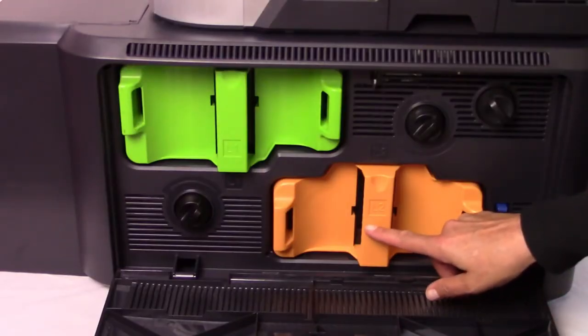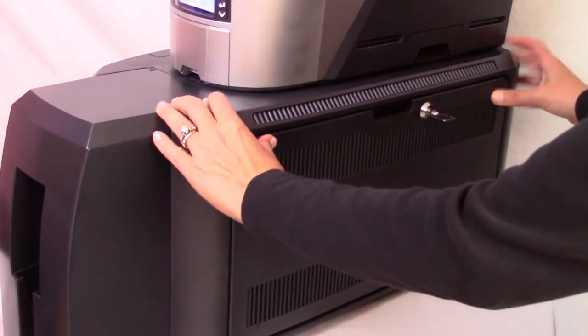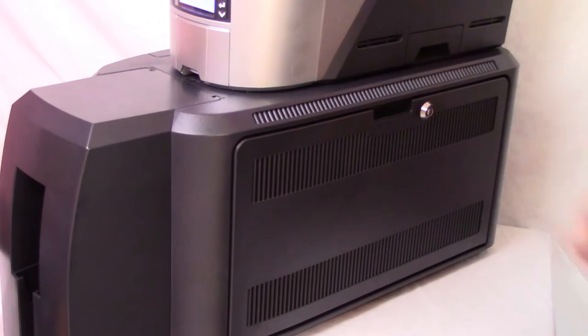If necessary, load the overlay in the second cartridge. When you are finished loading the new overlay material, close and lock the laminator access door.